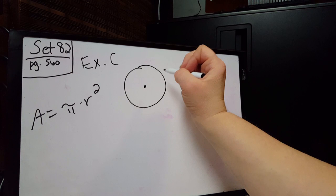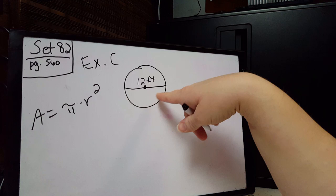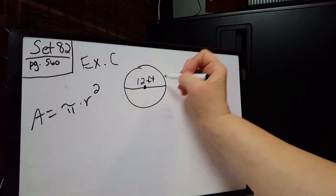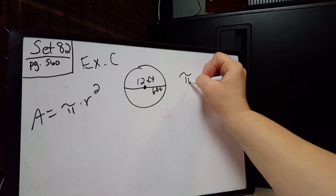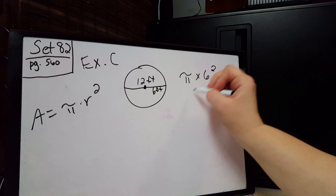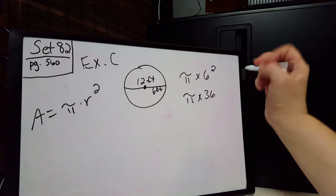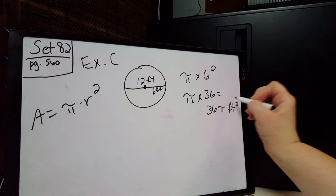Example C gives us a circle with a diameter of 12 feet. Since our formula uses the radius, we first find that: the radius is always half the diameter, so half of 12 is 6. The radius is 6 feet. This problem tells us to leave pi as pi, so we have pi times 6 squared, which is pi times 36. We always put the number first: the answer is 36π feet squared.